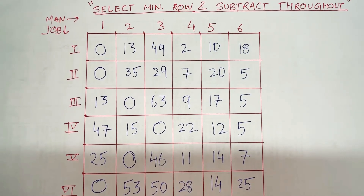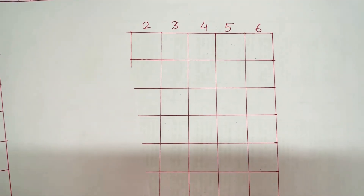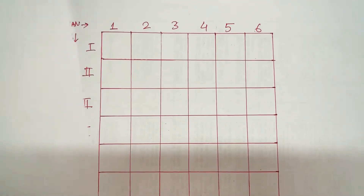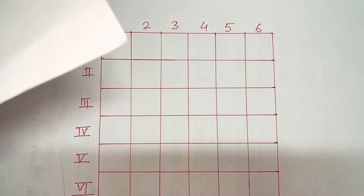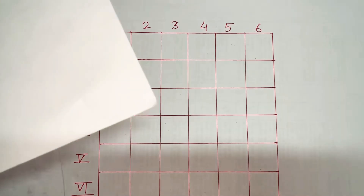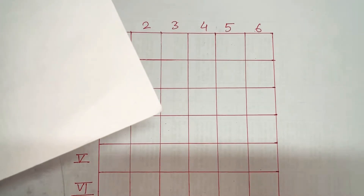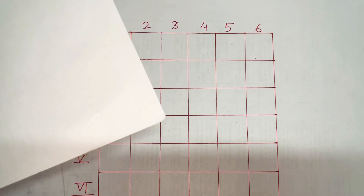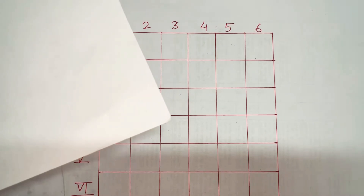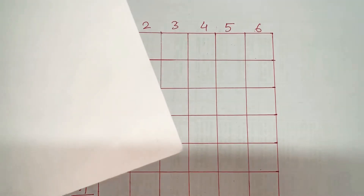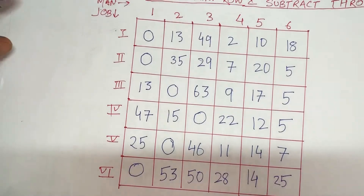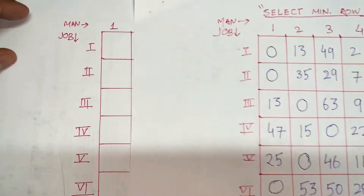The second step is: select the minimum of each column and subtract it throughout. So let's go ahead and do that one by one.